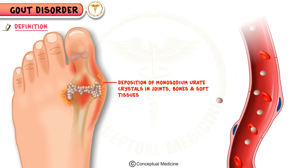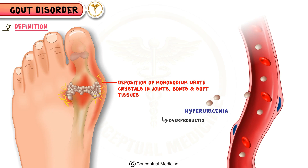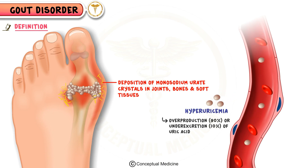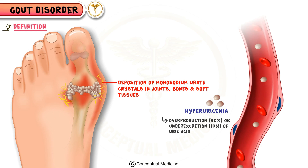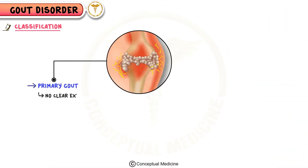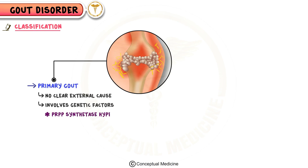Gout occurs due to hyperuricemia, either from overproduction (90%) or under-excretion (10%) of uric acid. Primary gout has no clear external cause and often involves genetic factors like PRPP synthetase hyperactivity or HGPRT deficiency, and is the most common type.